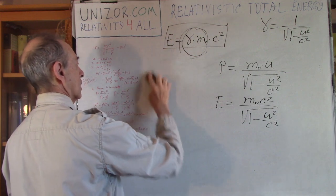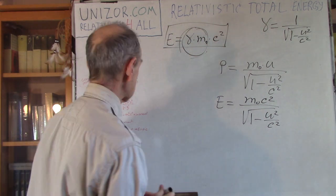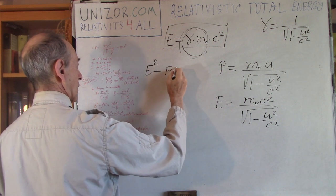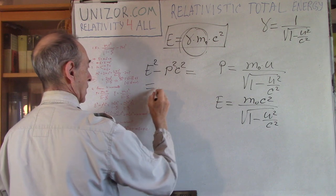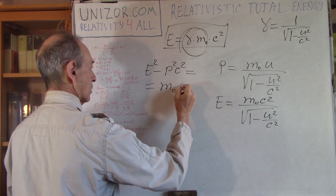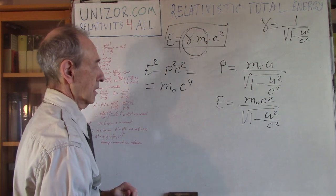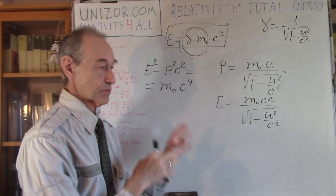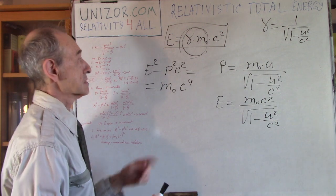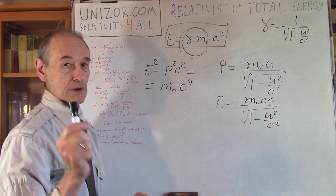Now, believe me or not — and you can do it yourself, and in the notes I did it explicitly — you can compute E squared minus p squared c squared and you will find it equals m0 squared c to the fourth. I don't want to do this algebra right now; it's really simple, just a couple of lines, and if you'd like to see them they are in the notes for this lecture on unizor.com.